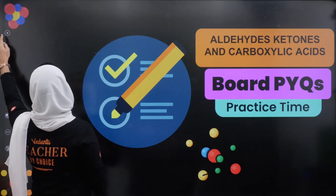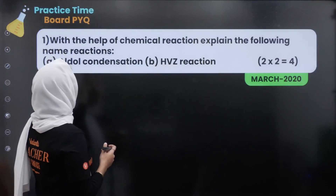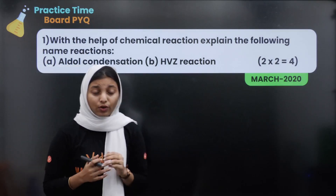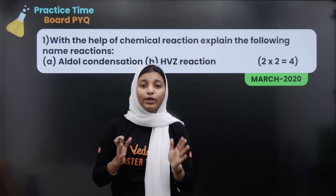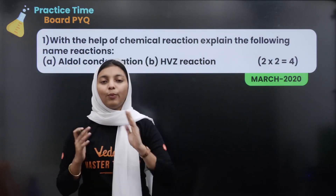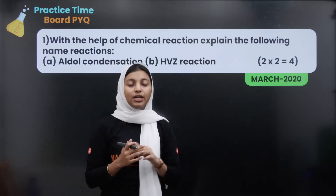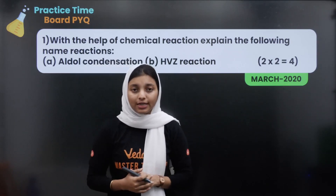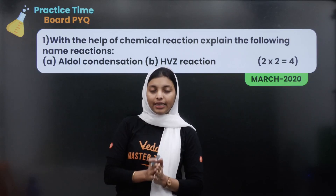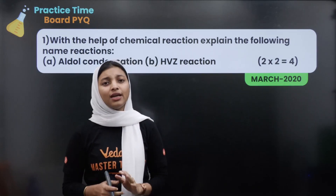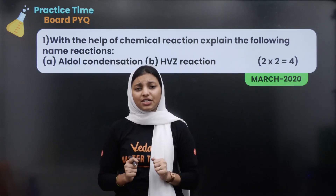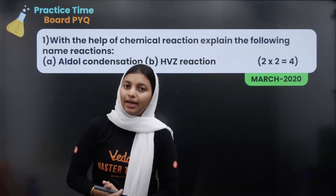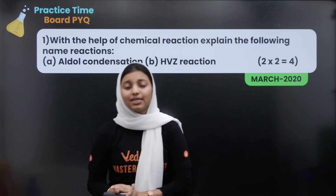The first question is: with the help of chemical reactions, explain the following name reactions. What are the name reactions? This is a very important topic called Aldehyde Ketones & Carboxylic Acids.